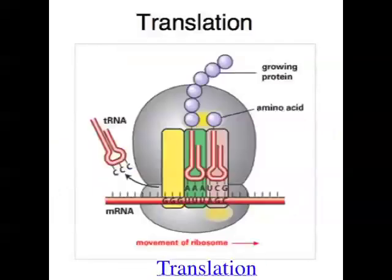Once transcription has finished, the next step in gene function is known as translation. This is where the instructions on the mRNA molecule are used to create a protein. Translation actually happens in the cytoplasm, because that is where the ribosomes are located, and translation happens on ribosomes. The messenger RNA leaves the nucleus via a nuclear pore, then joins onto a ribosome where it sits with its instructions, ready to make a protein.